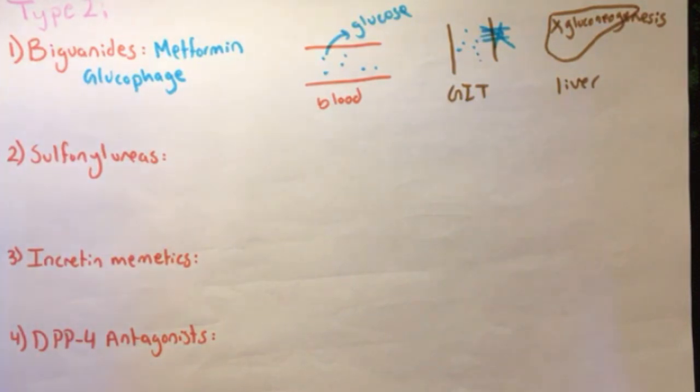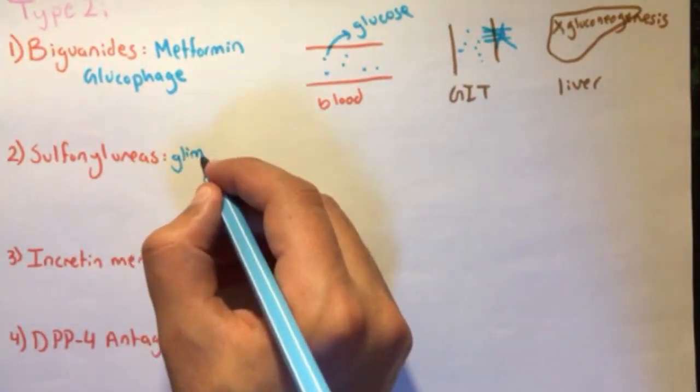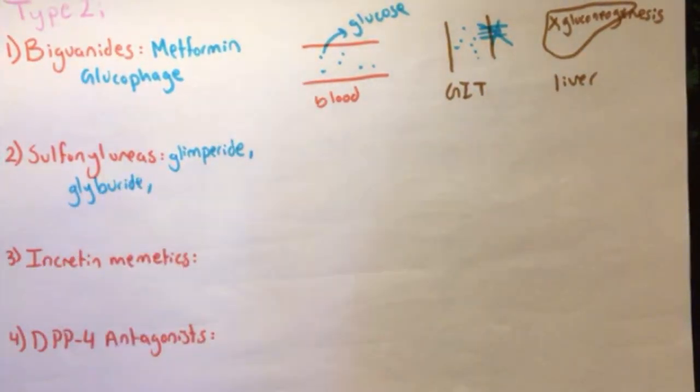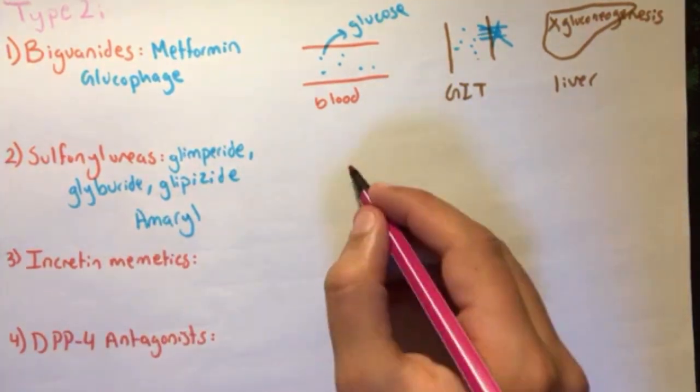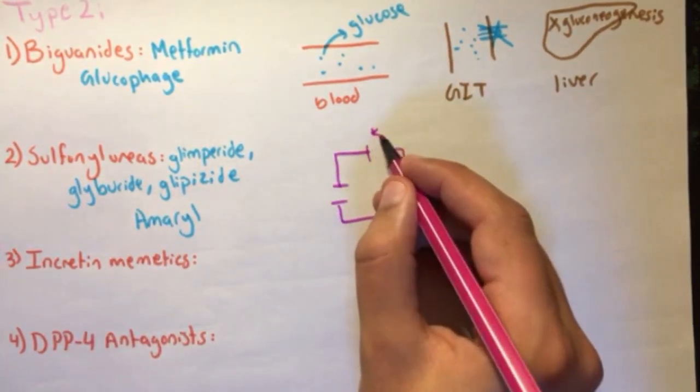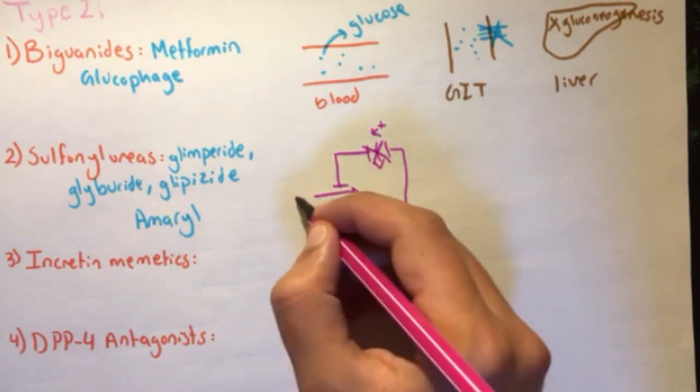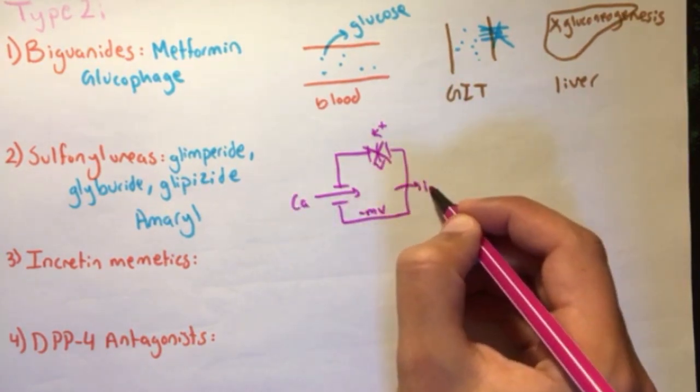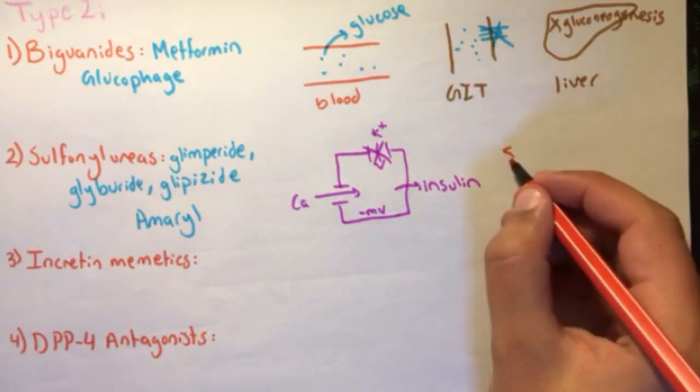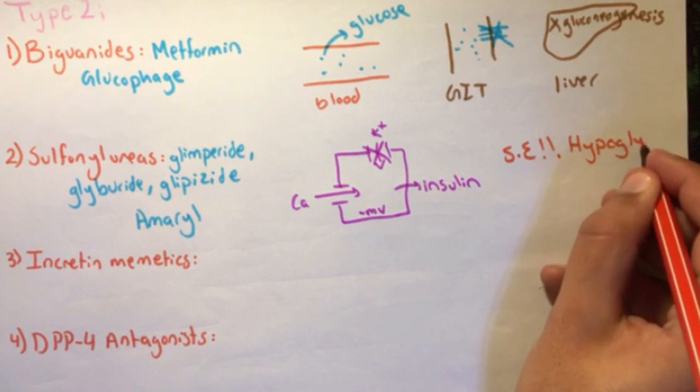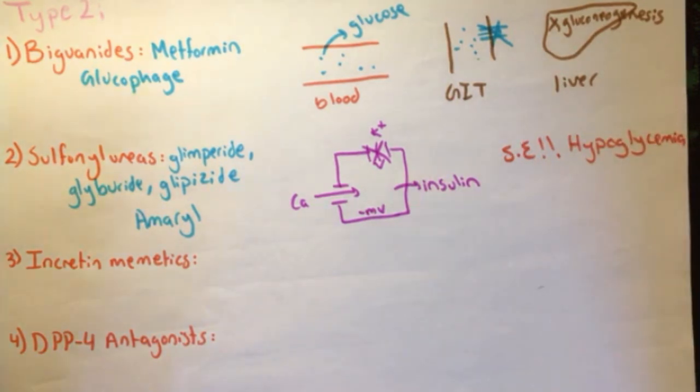The second class of drugs, also known as sulfonylureas, known as glimepiride, glyburide, glipizide, sold under the trade name Amaryl. Their mechanism of action is oral insulin secretagogues, meaning they increase the secretion of insulin by blocking the potassium pump. Therefore, it will cause depolarization of the cell that increases the calcium influx, which in turn creates more insulin. This can cause hypoglycemia and weight gain.